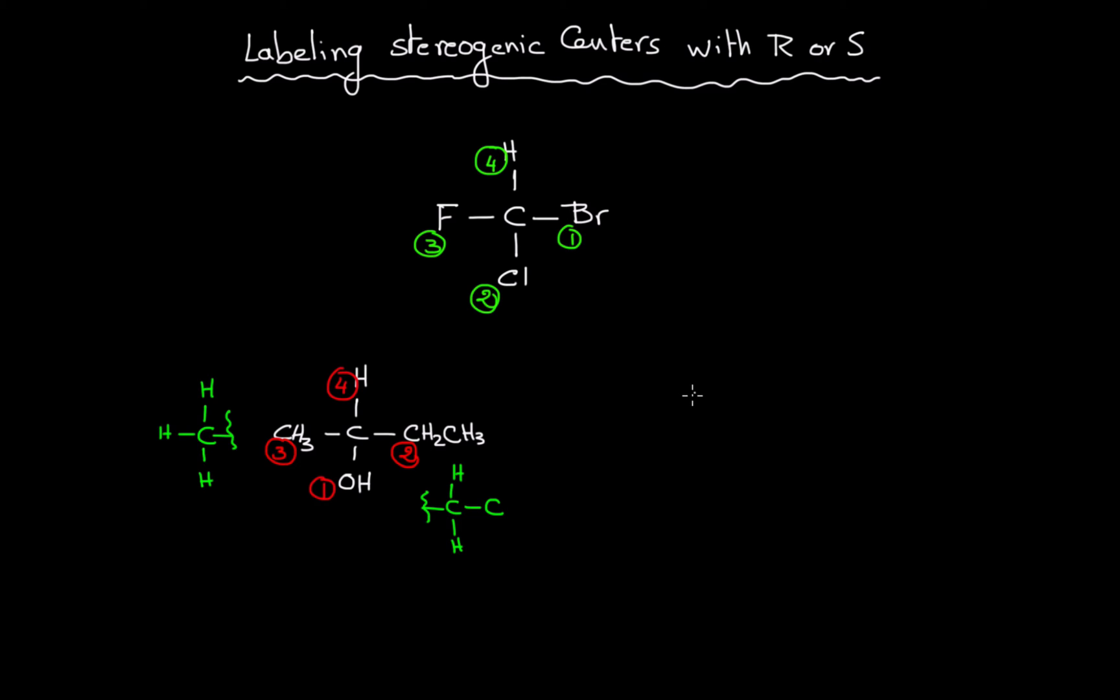Now if we have different isotopes like tritium, deuterium, and hydrogen, we know that tritium is H-1-3, deuterium is H-1-2, and hydrogen is H-1-1. All isotopes have the same atomic number, which is one, however they have different atomic masses. For isotopes, we proceed by atomic masses and give the highest atomic mass the highest priority. So tritium gets number one, deuterium gets number two, and hydrogen comes in third position and gets number three.